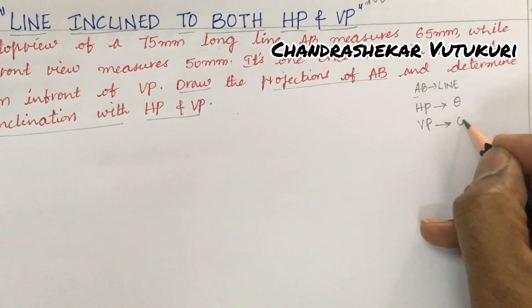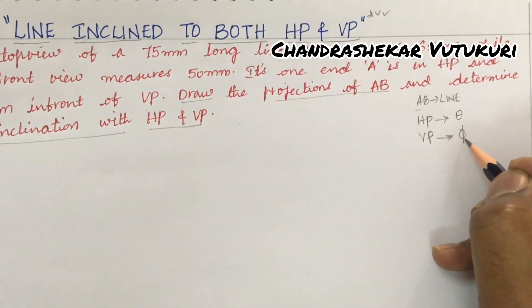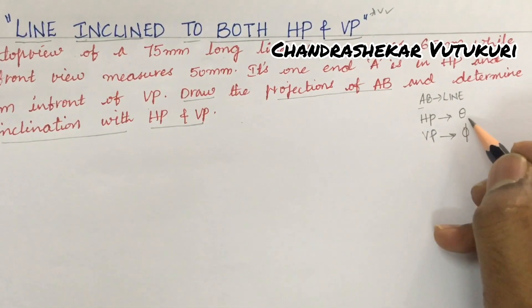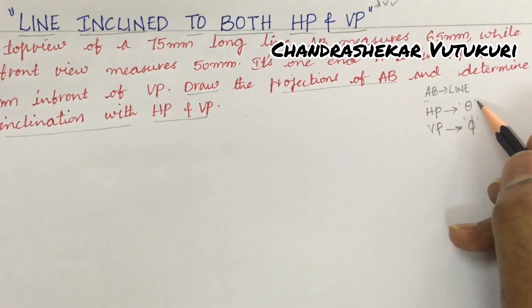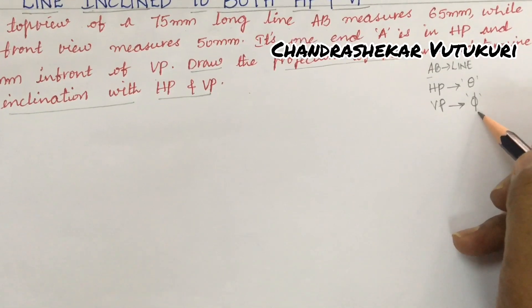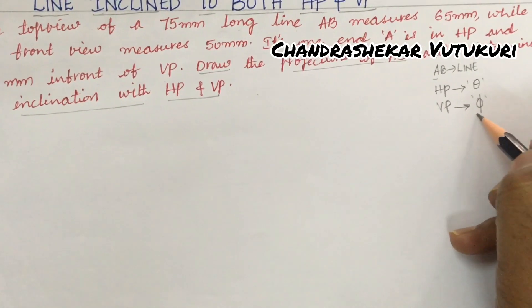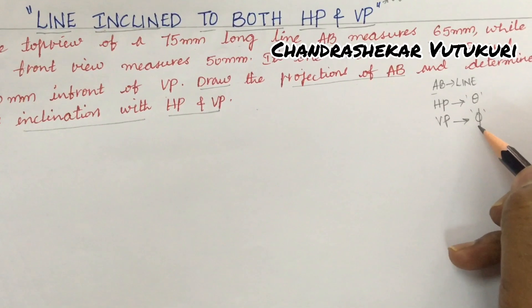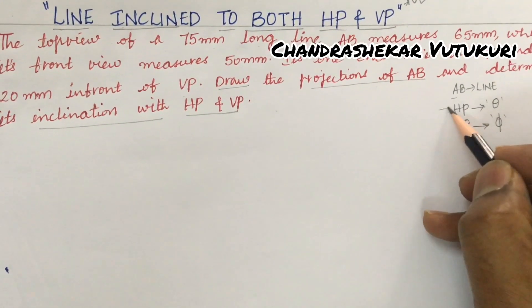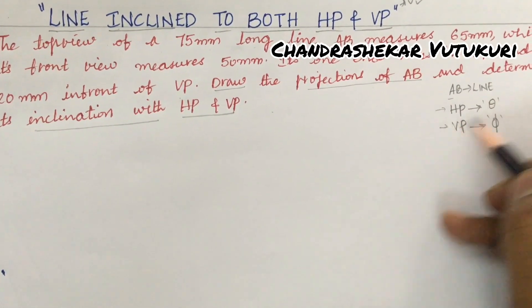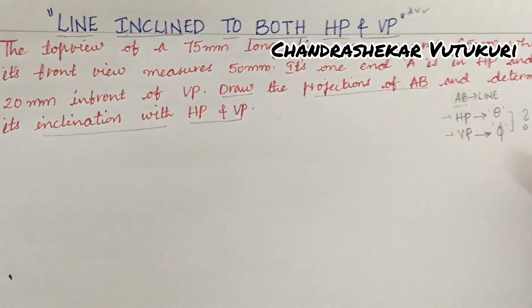And if it is inclined to VP, it is represented with the symbol phi. Please do work out all such types of problems where sometimes they will be asking the theta value and phi value, or they may be giving you theta as well as phi value directly in the problem so that you need to calculate. If theta and phi are the values related to HP and VP, they are said to be the question mark — meaning the unknowns — for a given length of line AB.